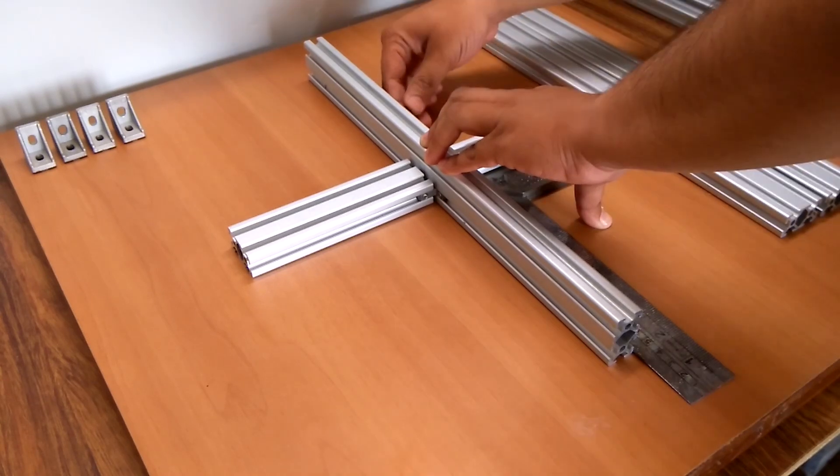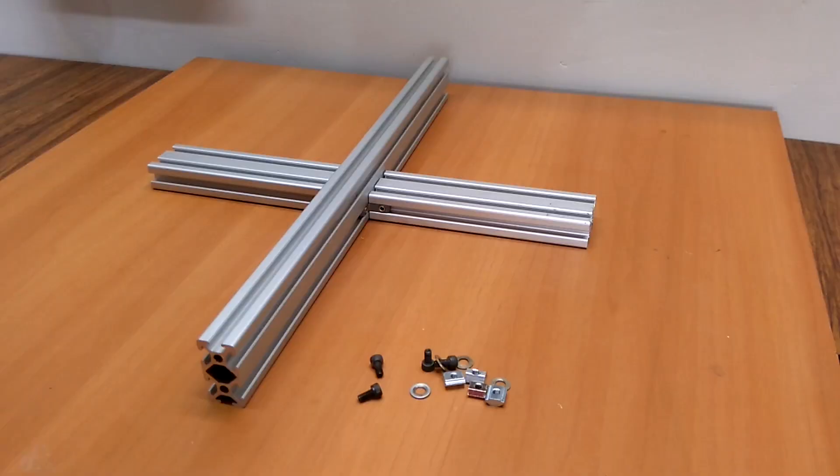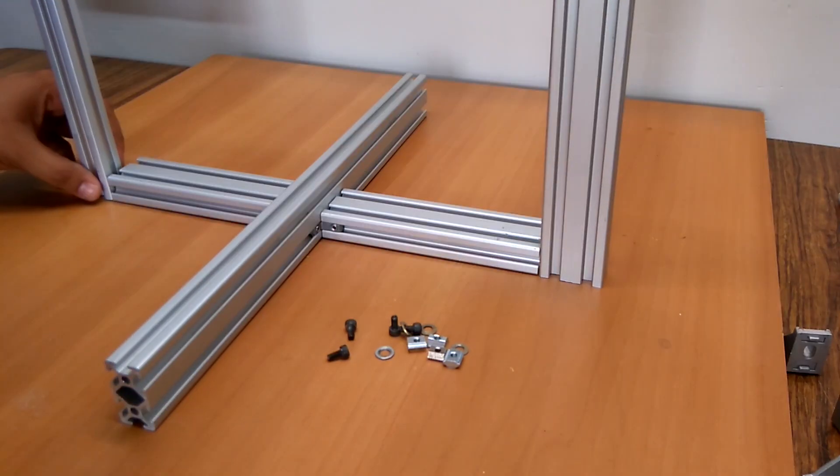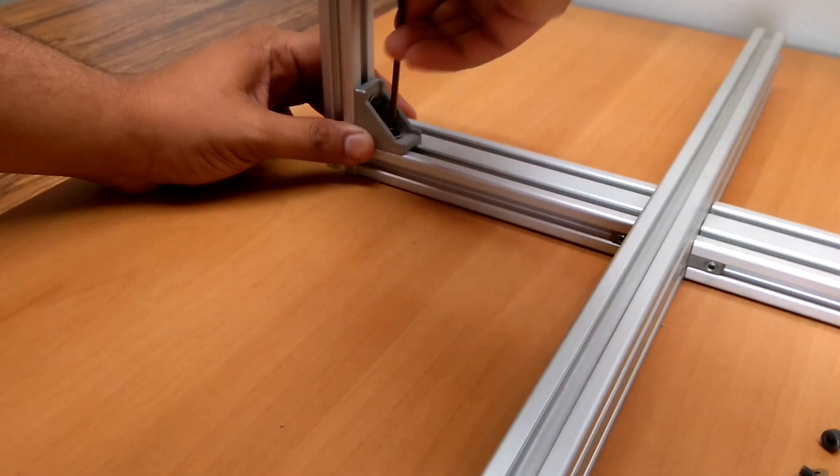I used a T-square to ensure proper angle and tightened the grub screws. The two 400mm extrusions are connected vertically for the Z axis using L brackets in this way.